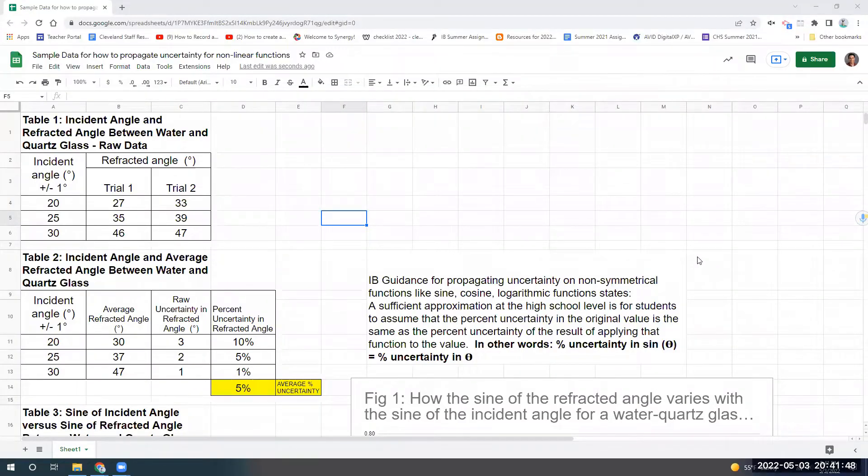Students, hi, this is Mr. Bob. In this video, I'm going to talk through how you go about using Google Sheets to propagate the uncertainty for when you have a data set and you have to do a linearization test that involves a non-symmetrical function. When I say non-symmetrical functions, I'm talking about things like sine, cosine, or logarithmic functions. So I'm just going to walk through what I did here and show you.